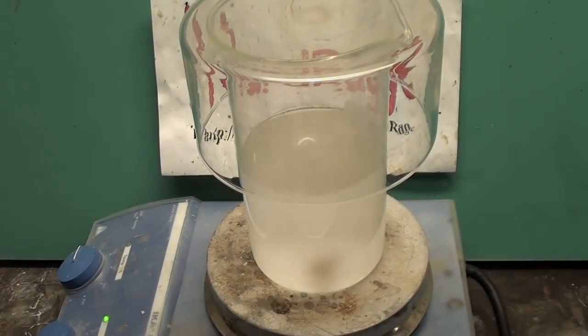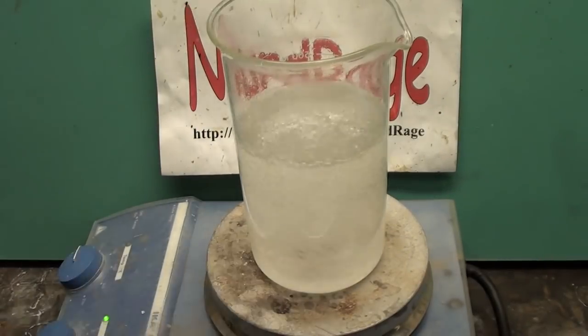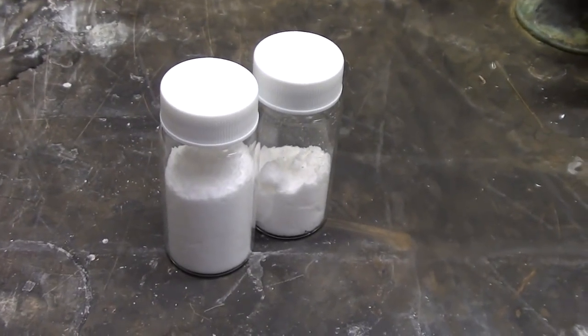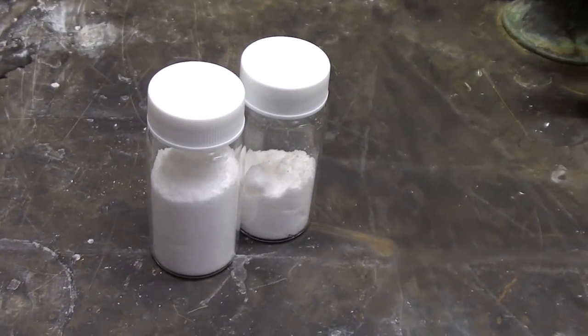Now for some additional notes. What I showed you was the crude method that gave me a yield of about 40% based on hypochlorite. For you advanced chemists, there are a few improvements to squeeze out an extra 10-20% yield.